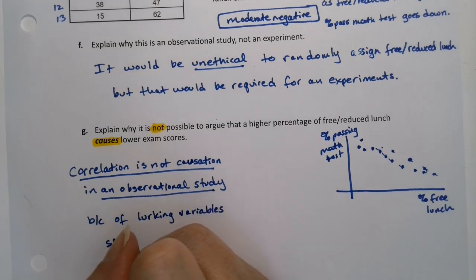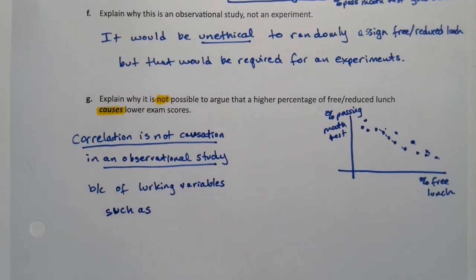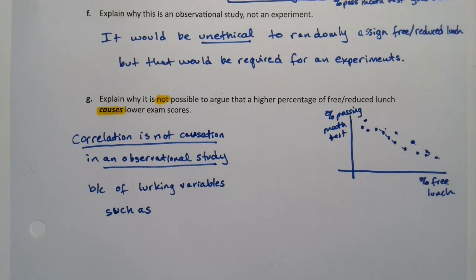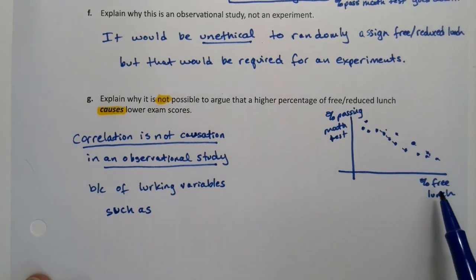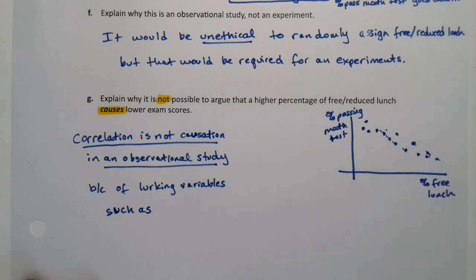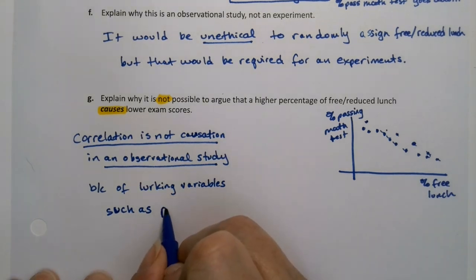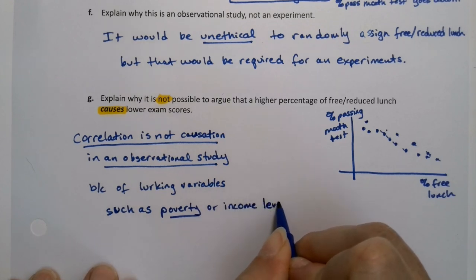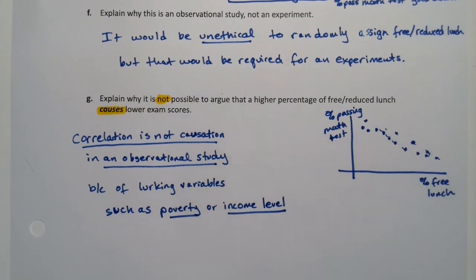Correlation is not causation in an observational study because of lurking variables. Such as... there's something else going on here. Something else that could be affecting what's happening. Something else that could affect whether students can pass a math test and whether they are on free reduced lunch. And it probably is affecting various other things as well. Now there's several candidates for this, but I think the biggest one would be poverty. Income. If you have a lot of students on free reduced lunch, that means generally you have a lower income level. Lower income levels tend to be tied to lower math scores for a wide variety of reasons. Stress, sleep quality, parents can't be as involved as they would like, et cetera. So poverty or income level, those are both some big ones in this particular. Your income level affects both of these things.